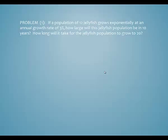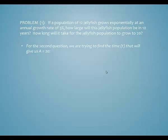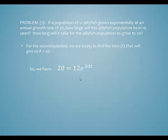For the second question, how long will it take for the jellyfish population to grow to 20? The difference here is we don't have a particular time — we're trying to find the amount of time that will give us a population of 20. So I'm going to replace a with 20 and find the value of t. My initial population is still 12 and my growth rate is still 3 percent, so I just need to solve this equation for t.